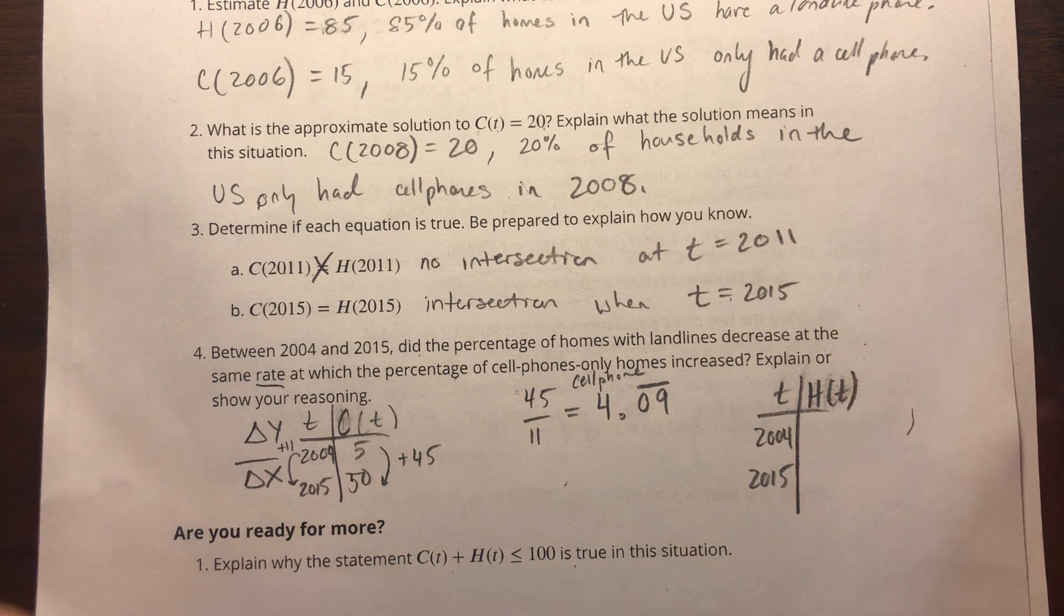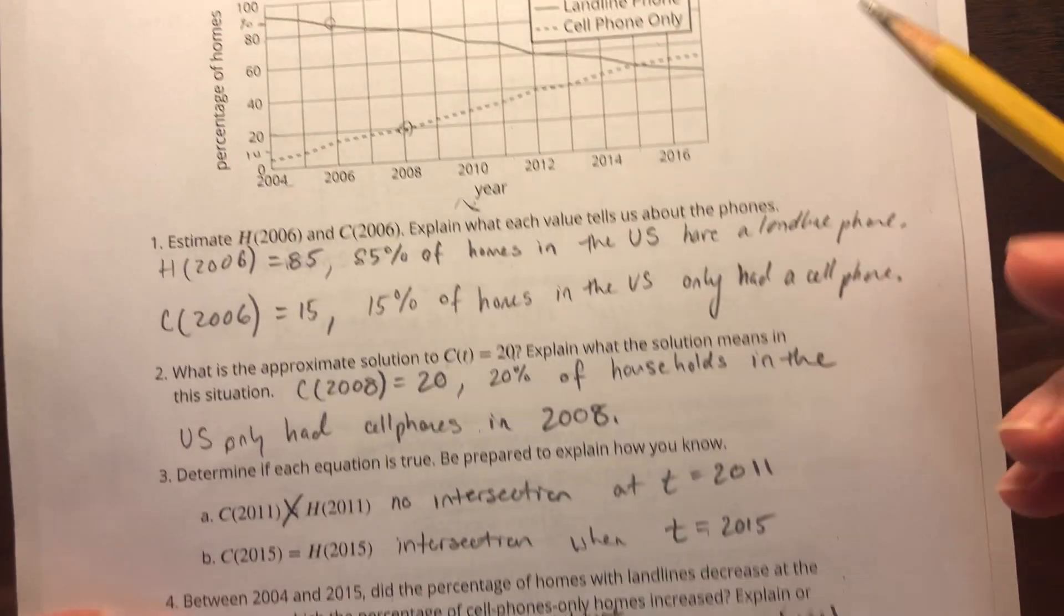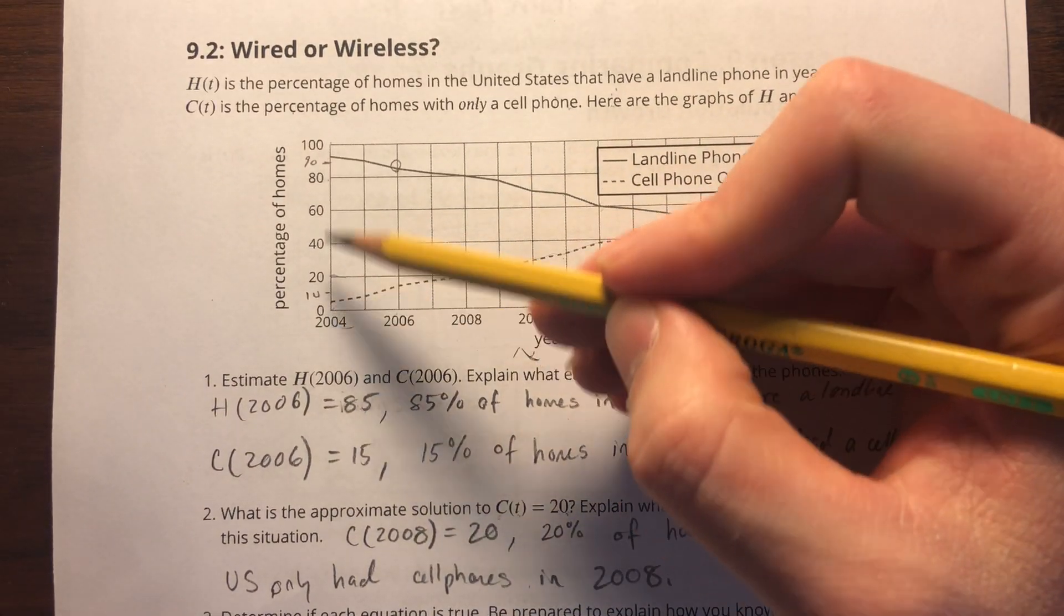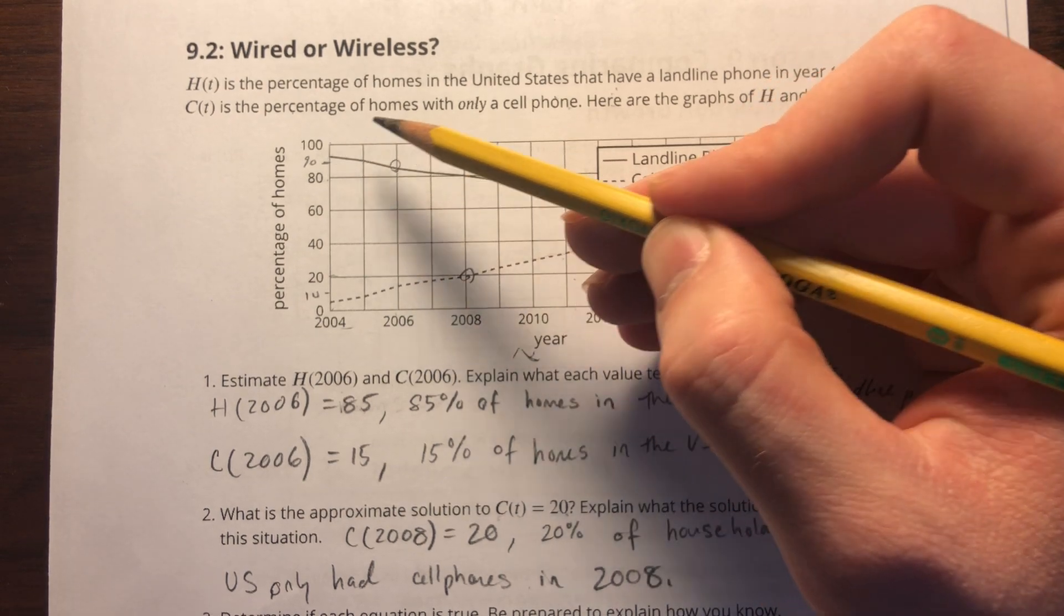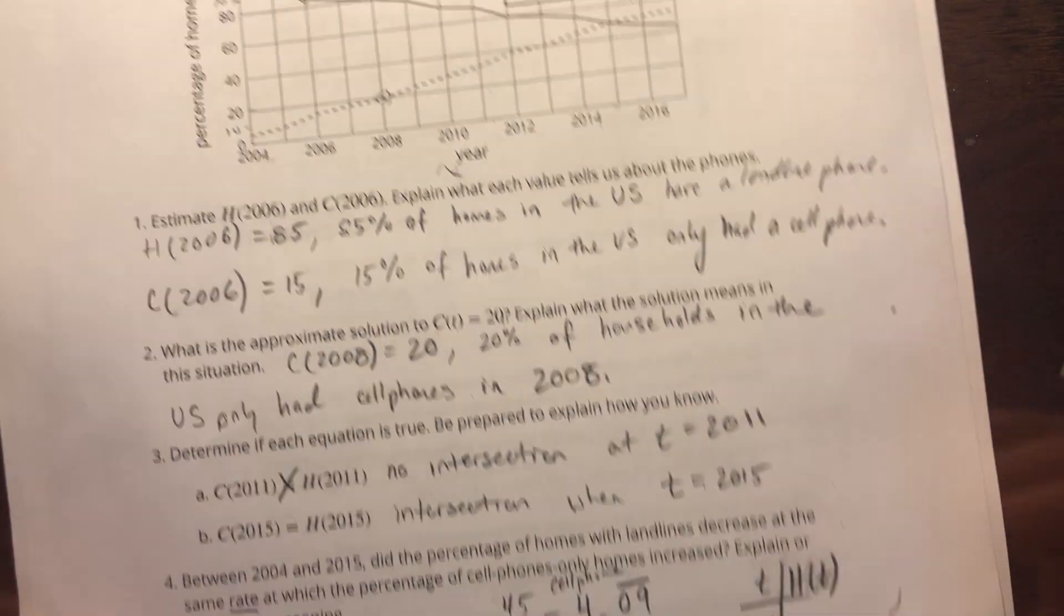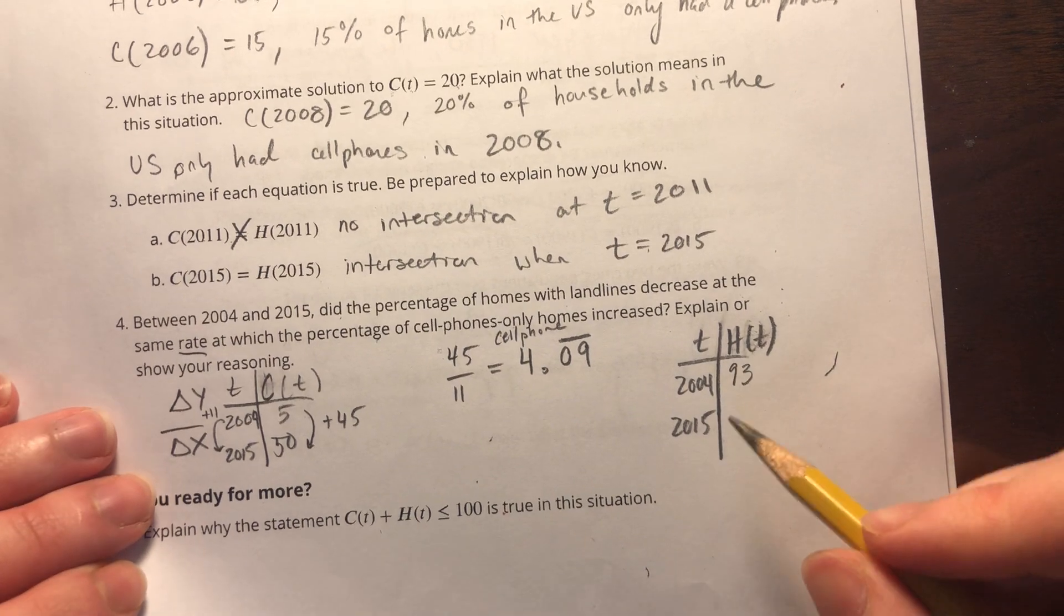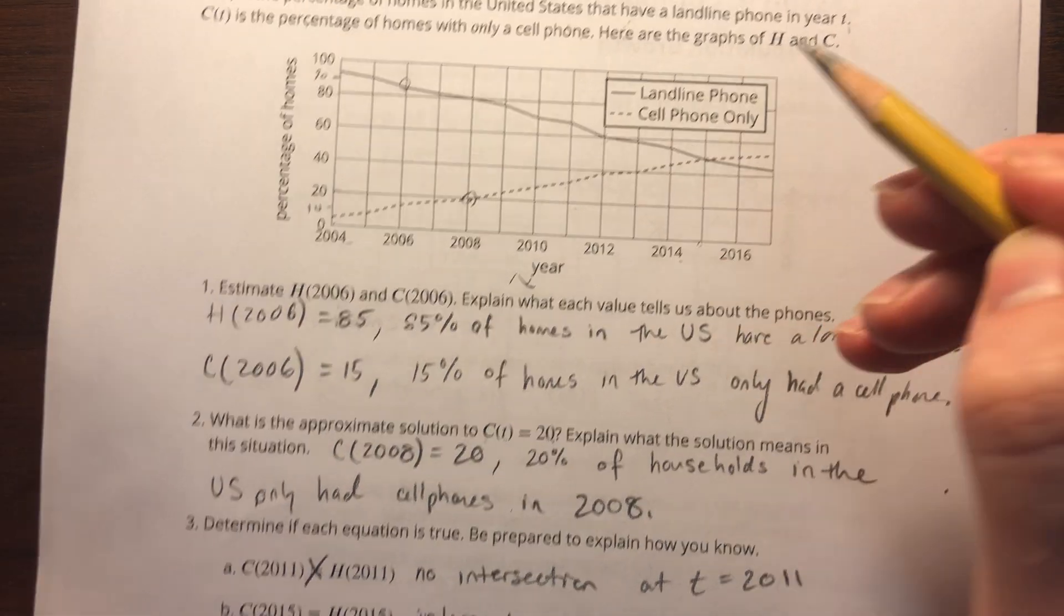Now we're looking at landline phones. In 2004, that looks like it's like 93%. If you said 95 or somewhere around there, it's fine, but that looks like 93 to me. In 2015 it's decreased, and that's where they intersect, so I'm going to use the same value that I used here.